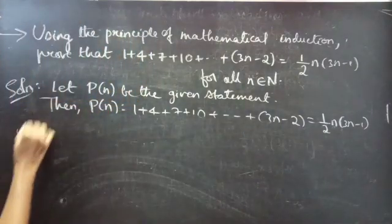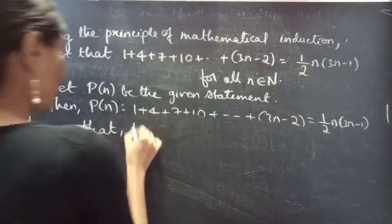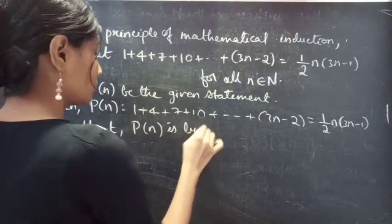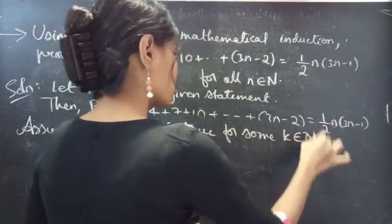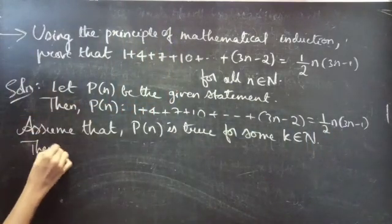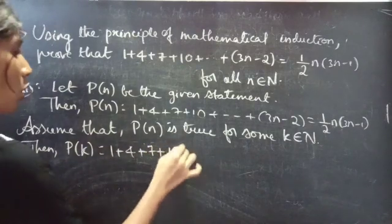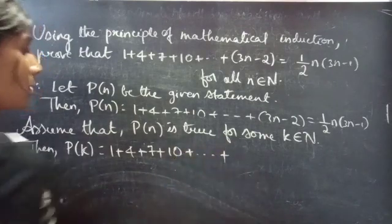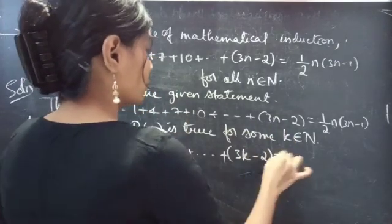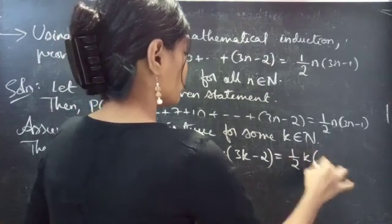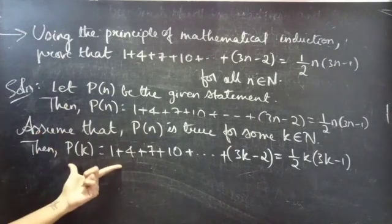Now assume P(n) is true for some k belonging to natural numbers. Then P(k) states that 1 + 4 + 7 + ... + (3k - 2) = (1/2) · k · (3k - 1). The kth term is obtained by replacing n by k in the general term.